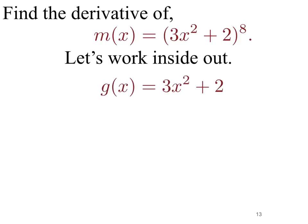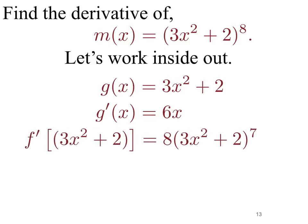Working inside out: the inside function is g of x equals 3x squared plus 2. We now need the derivative of that function, which is 6x — that's using the power rule. The outside function is some function raised to the eighth power. Taking the derivative of f gives us 8 times 3x squared plus 2 to the seventh power, because using the power rule that would be 8 times the parenthesis to the seventh power.